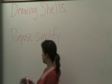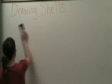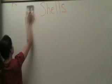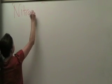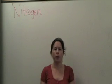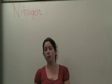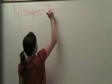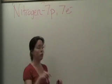Let's start with an example. We're going to do nitrogen. So you can look at your periodic table, and you know that nitrogen has seven protons, and to have an atom we have the same number of protons as electrons. So nitrogen has seven protons and seven electrons, and we're going to put those electrons into the shells.